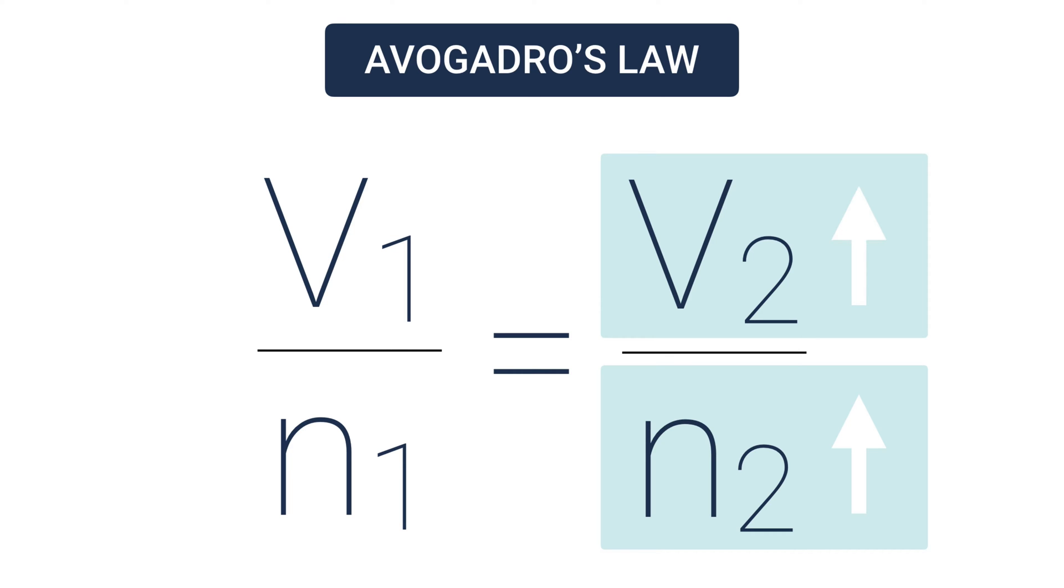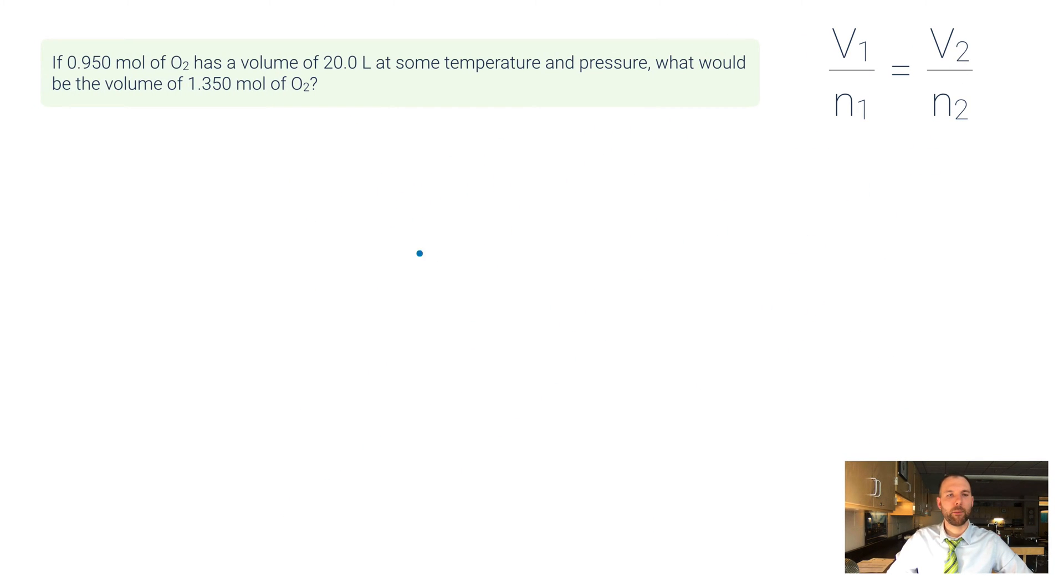As volume increases, the amount of moles, which is what n is, also has to increase. And as one decreases, the other will have to decrease as well. So let's do a quick example problem.